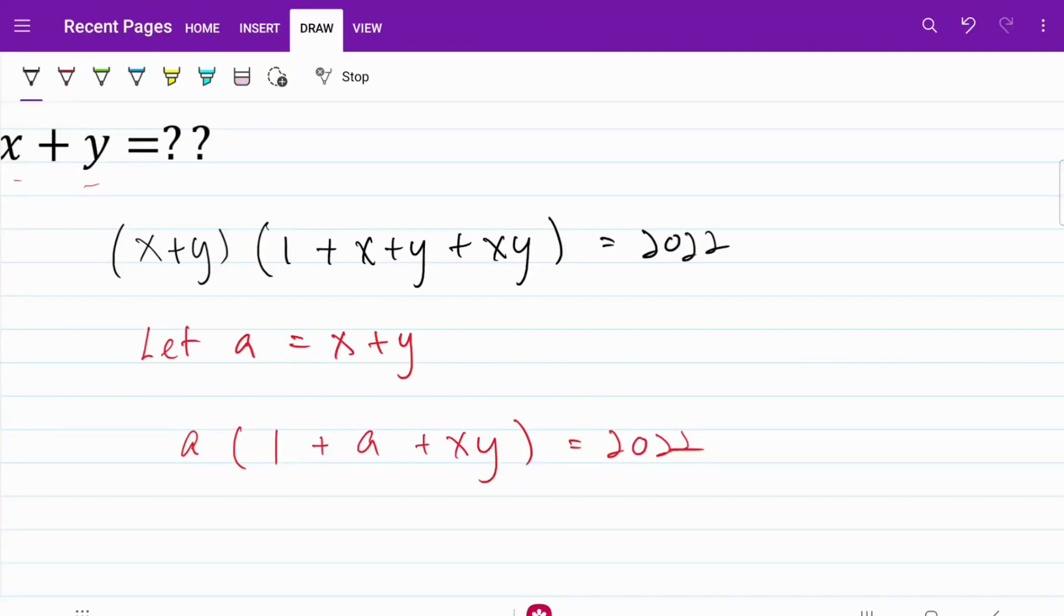Let's open up the bracket. So what I have now is a squared plus a plus a multiplied by xy is equal to 2022. I'm going to go ahead and call this my equation one.